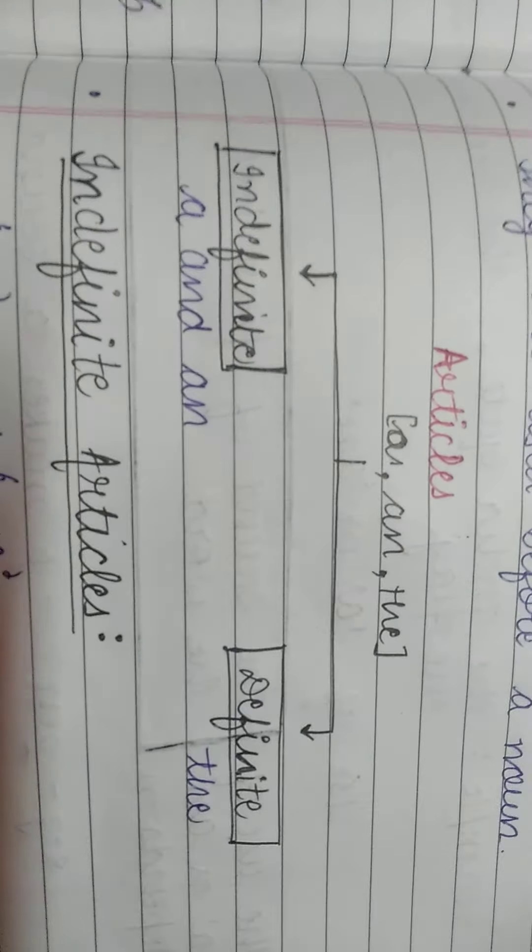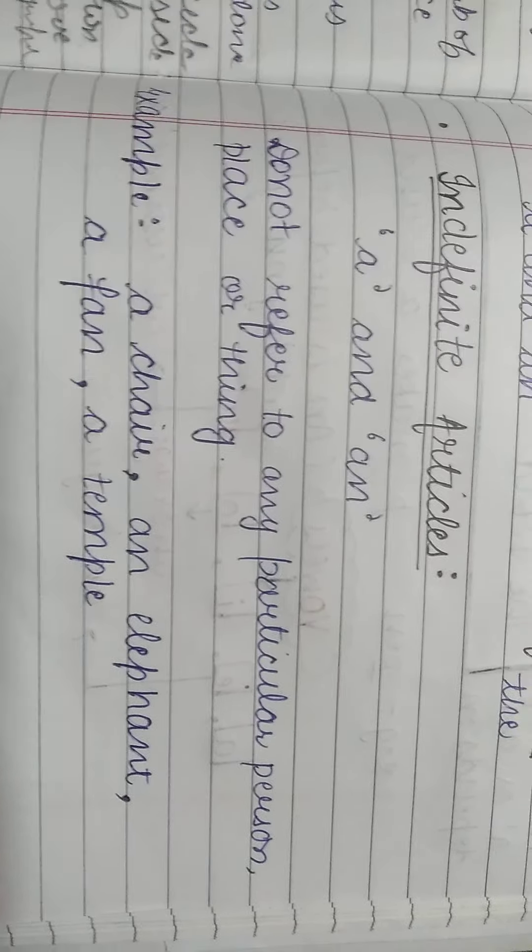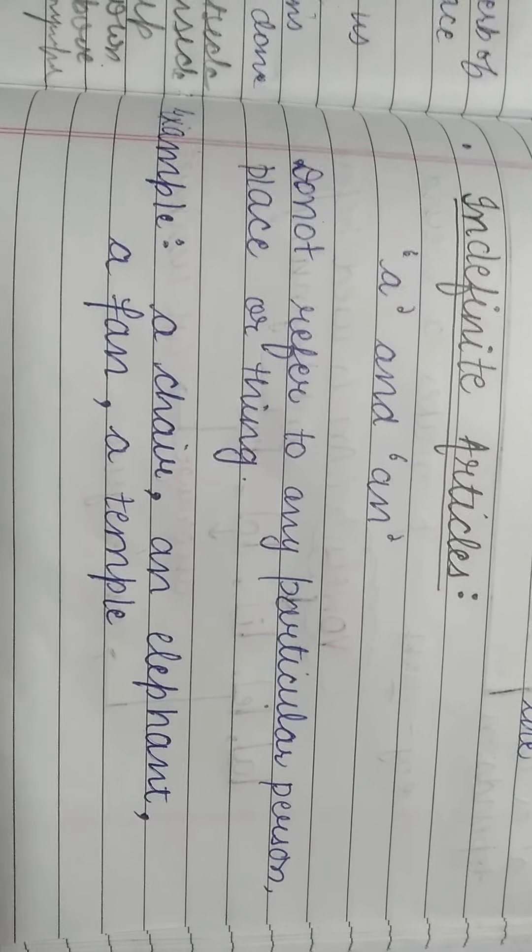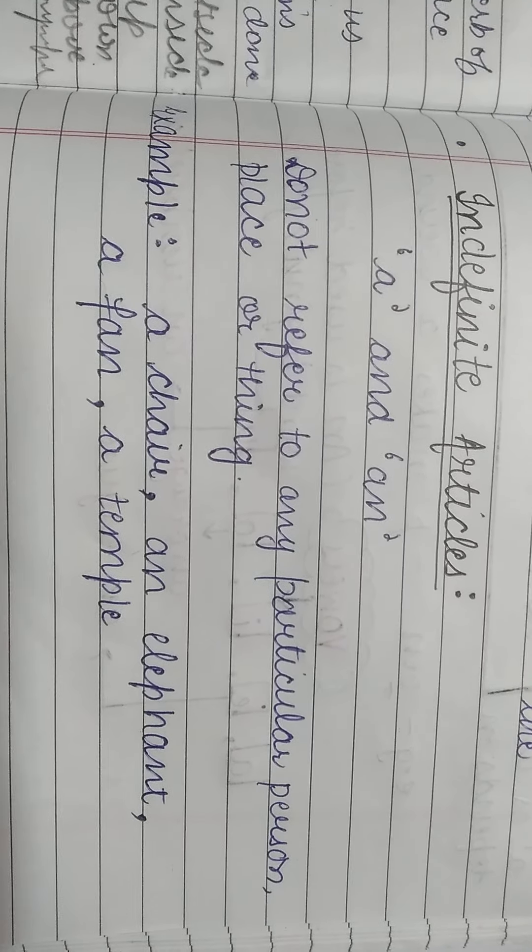So, firstly, you have to clear this. The first one is indefinite article and the second one is definite article. The indefinite articles are A and An, and the definite article is The.